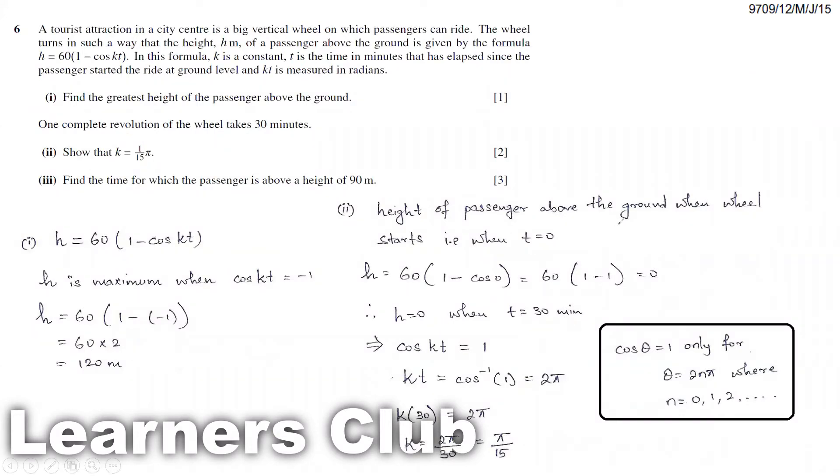The height of the passenger above the ground when the wheel starts: when the wheel starts it will start at time t equals zero. First we need to find the height at which the person is going to start when time t equals zero. We substitute in place of t zero, so it becomes cos zero. We know cos zero is one. One minus one becomes zero. So when time t is zero, the height of the passenger from the ground is also zero.